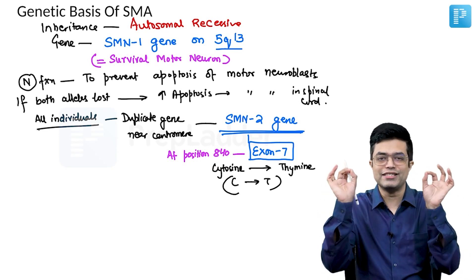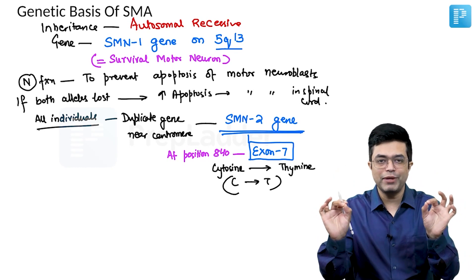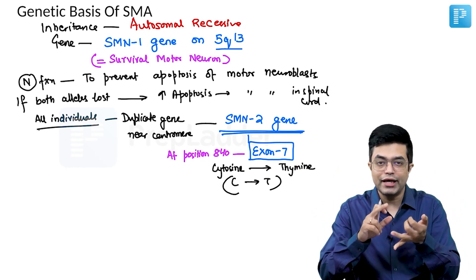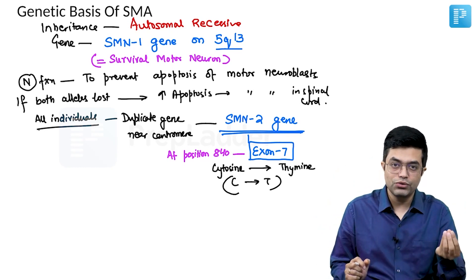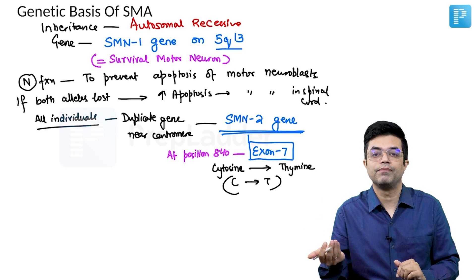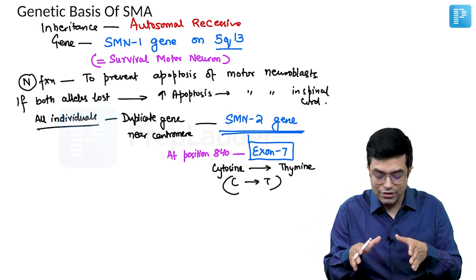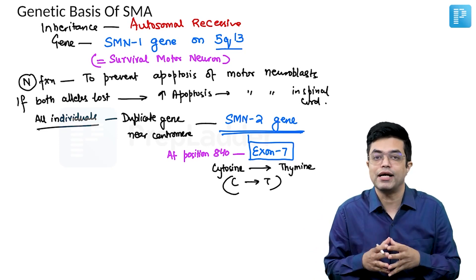SMN1, SMN2 exactly same, the only difference being at position 840, exon 7. In SMN1 you have cytosine residue, in place of SMN2 you have thiamine residue. So what exactly happens? Let us try to see diagrammatically what exactly is happening.